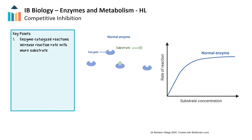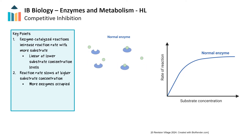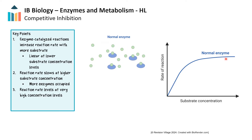The normal curve for the rate of an enzyme-catalyzed reaction as substrate concentration increases starts with a linear increase at low substrate concentration levels. Here, the enzyme's active sites are largely unoccupied, so the rate of reaction rises proportionally as more substrate becomes available, allowing more enzyme-substrate complexes to form. As substrate concentration increases further, the rate of reaction begins to slow down as the enzyme's active sites become increasingly occupied. Eventually, the curve levels off, reaching a plateau when all the enzyme molecules are saturated with substrate, and adding more substrate has no effect on the reaction rate, as the enzyme is working at its maximum capacity.